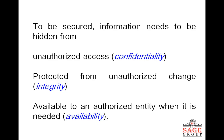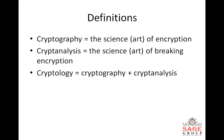Availability means that information is available to an authorized entity when it is needed. So cryptography is basically a technique used to authenticate the sender and receiver of a message to each other. If anybody accesses your data in between — without your knowledge, without the ID and password you provided — then that person is called an attacker.